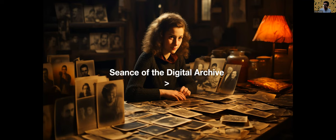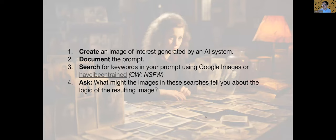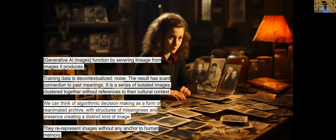And with that, I think it's best to stop and ask you to record your questions and think about things that you'd like to discuss with me in our live session. And I just really want to say, if you're interested in testing this, and you have access to an AI system, do feel free to create an image of interest using that AI system, document your prompt, and then search for the keywords in your prompt using either Google Images or HaveIBeenTrained.com, which will create explicit content just so you're warned. If you don't want to see gore or pornography, avoid HaveIBeenTrained, instead use Google Images. It will not give you a direct representation of the training data, but you will be able to make inferences. And then ask yourself, what might the images in these searches tell you about the logic of the image that you've created and the prompt you've used to get it?